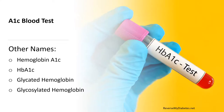The A1c blood test has a number of different names — it's all the same test. It can be called A1c, hemoglobin A1c, HbA1c, glycated hemoglobin, or glycosylated hemoglobin. Hemoglobin is a protein in your red blood cells that carries oxygen throughout your body. Good circulation, especially for a diabetic, is very important to our health and something to always monitor.